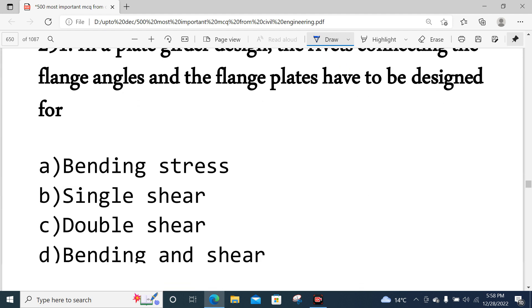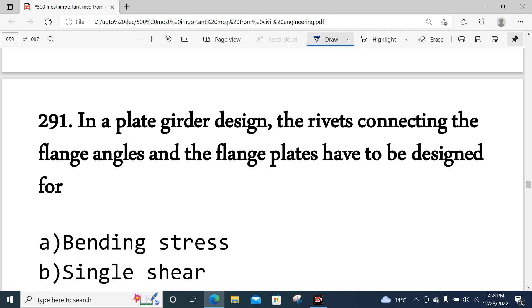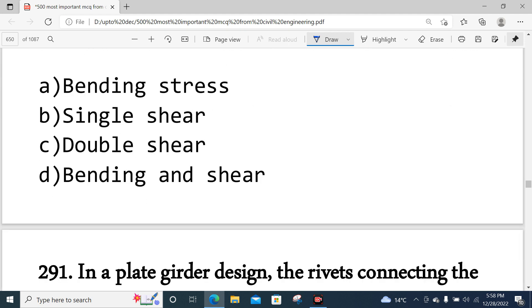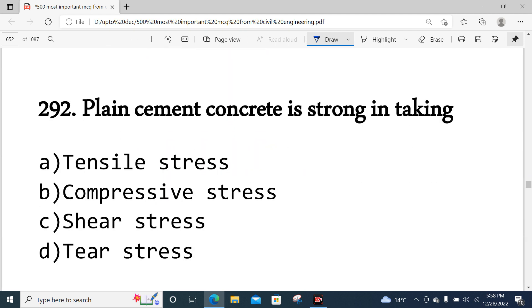Question number 291: In a plate girder, the rivets connecting the flange angles and the flange plate have to be designed for shear. Option B is correct.